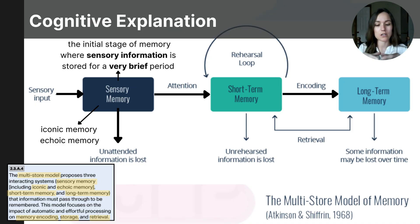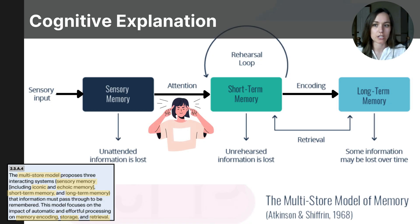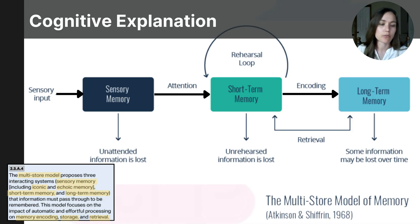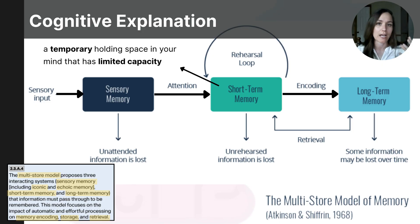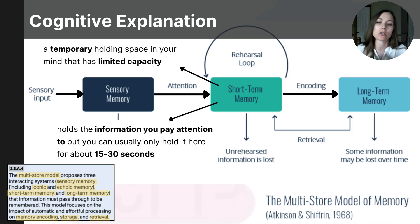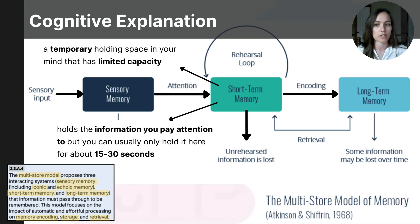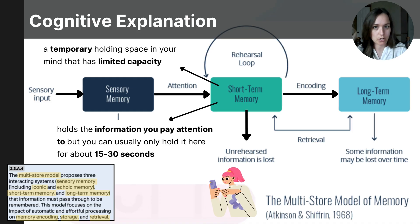If you pay attention to the information and it's meaningful to you, it moves from sensory memory into short-term memory. In psychology, short-term memory refers to a temporary holding place in your mind with limited capacity, holding information you pay attention to for about 15 to 30 seconds. Information in short-term memory can be rehearsed or repeated to extend its duration. However, if you stop rehearsing it, that information will fade away. Short-term memory is what allows you to remember a phone number long enough to dial it, but after you stop rehearsing it, you'll likely lose it.